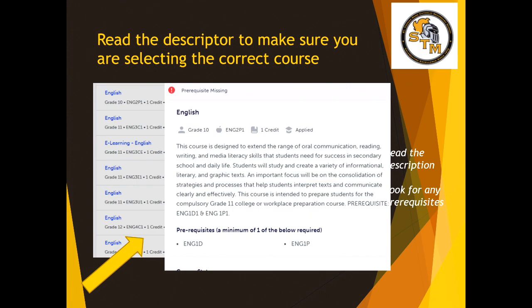When you click on a course, another menu will pop up with the ministry definition and explanation of the course. It will list prerequisites, how many credits it's worth, what grade it's in, and at the top it will tell you the subject and stream of the course. Make sure you read the descriptor to confirm you are in the right course.